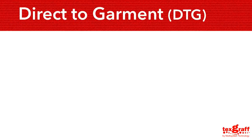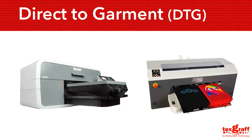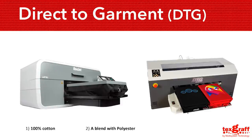You can print on jeans or any 100% cotton or a blend of cotton and polyester. As the development of printers and inks advances, DTG printers are becoming more suitable to print on polyester as well as synthetics. Take note that DTG printers use a water-based CMYK — cyan, magenta, yellow, and black — and white pigment ink, so these inks can print on light colored garments as well as dark ones.